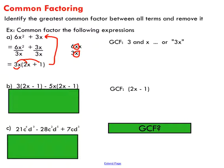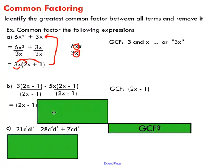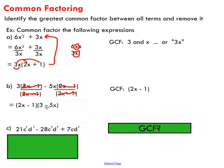That may be difficult to wrap your head around, but think of it this way: these two terms have the entire binomial (2x minus 1) in common, so that is the greatest common factor. We pull it out by division — dividing both terms by (2x minus 1). We write the common factor outside the brackets. The (2x minus 1) cancels in each term, leaving 3 minus 5x inside the brackets.